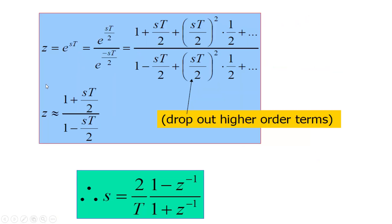Now let us see what the bilinear transformation looks like. We start with z = e^(sT), which comes from the standard relationship between the Laplace transform and the z-transform. Doing a certain manipulation in this equation, we write e^(sT/2) and take another part in the denominator.